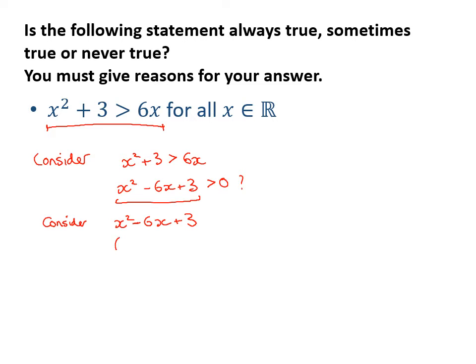And what we normally do is we complete the square and then we can make some kind of deduction around that. So if I complete the square on that, x minus 3 all squared, take away 9 and then add 3. So that is equal to x minus 3 all squared minus 6. Now this is always positive, greater than or equal to 0. And so this is going to be, I can see now that this whole thing is going to be sometimes positive and sometimes negative.